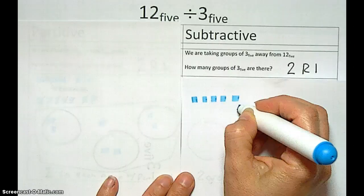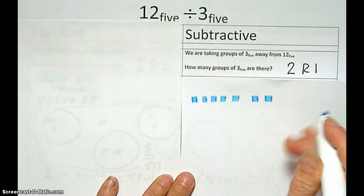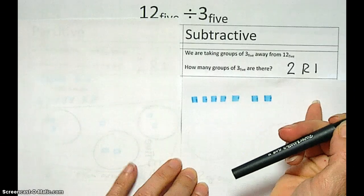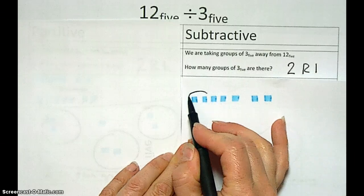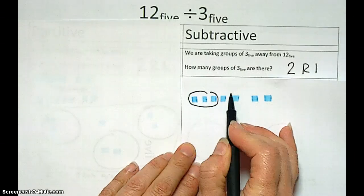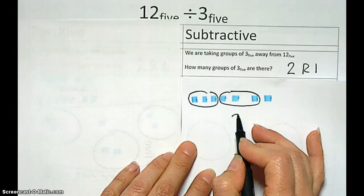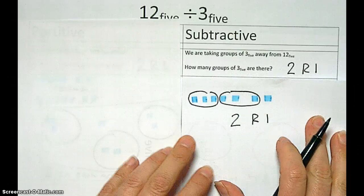Here's our 1, 0, base 5, 1, 1, base 5, 1, 2, base 5. There they are. And the question is, how many groups of 3, base 5 are there? There's 1 group, 2 groups, and 1 remainder. So there's 2 remainder 1 with that method.